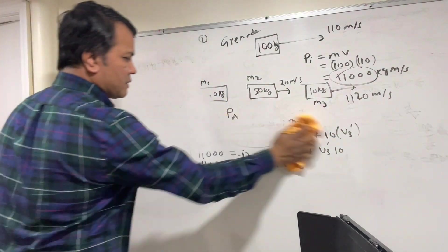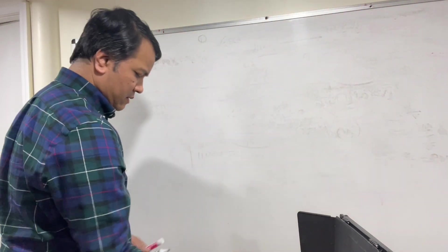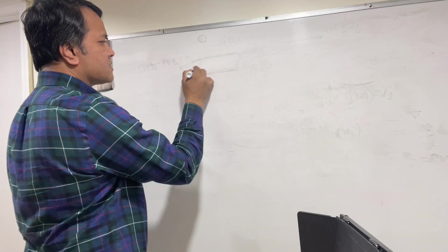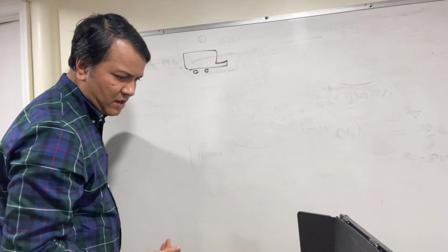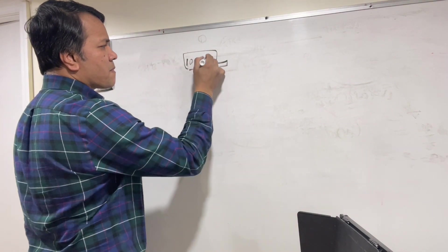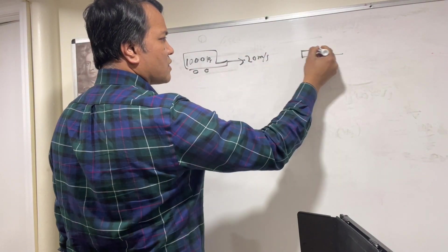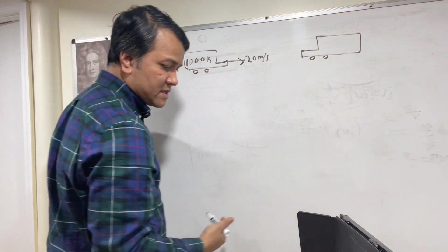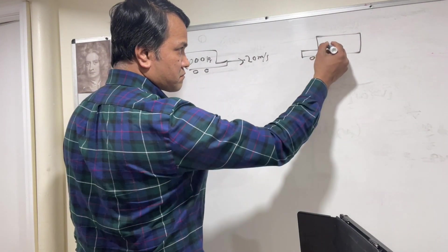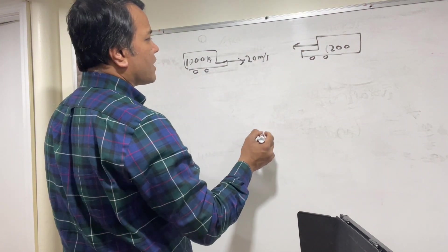Problem number 3: collision of two cars. Car 1 is 1,000 kg moving east at 20 m/s. Car 2 is 1,200 kg moving at 25 m/s. This is the before state.